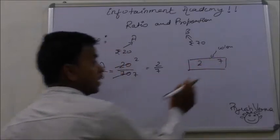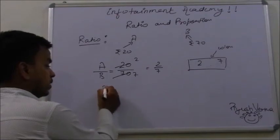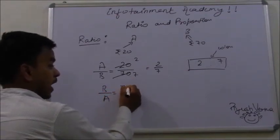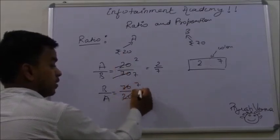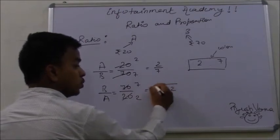This is the ratio of A to B. In order to find the ratio of B to A, just simply write the quantity of B in the numerator and the quantity of A in the denominator and simplify it. The ratio of B to A comes out to be 7 is to 2.